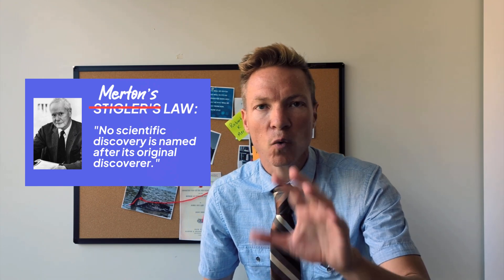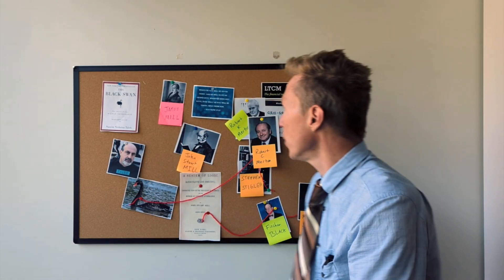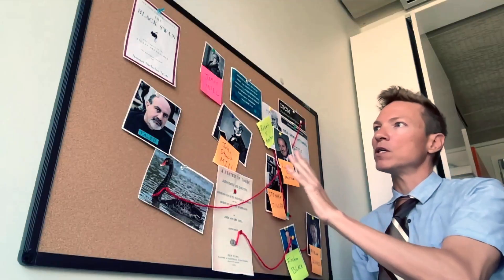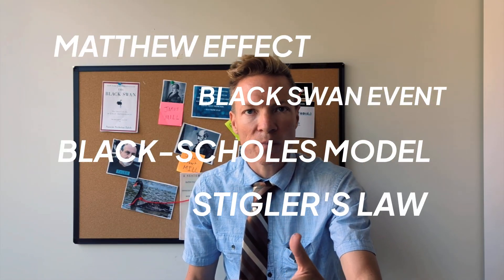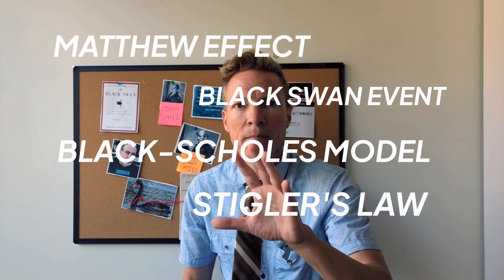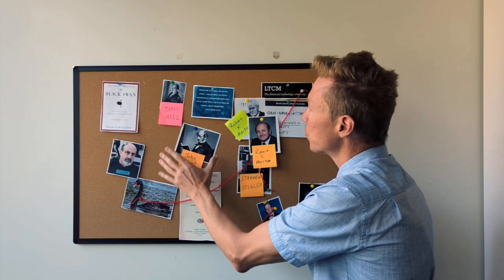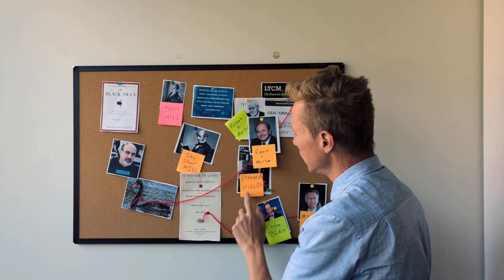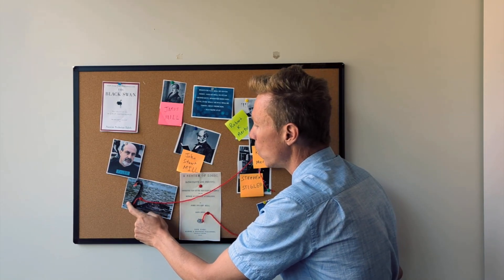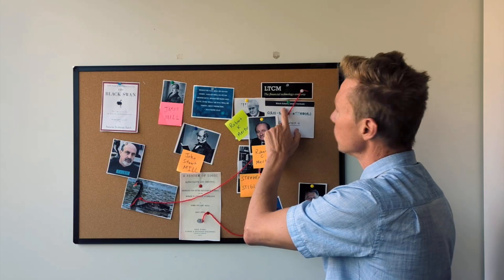Now maybe you're sitting there thinking, what's the point? This video is a mess. That's the point. Science is a mess. It's complex. It's collective. Simple narratives and just-so stories are often lies or half-truths. Here we have a bunch of legendary scientists with things named after them that either they didn't invent, or they didn't invent by themselves. And at the center of our web is John Stuart Mill — product of the Matthew Effect, developer of Stigler's Law and the concept of the Black Swan, foreseer of the issues of the Black-Scholes model. And yet, there's no law or theory named after John Stuart Mill.